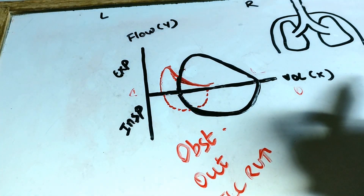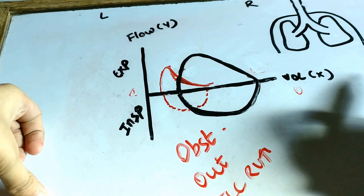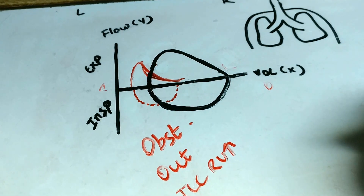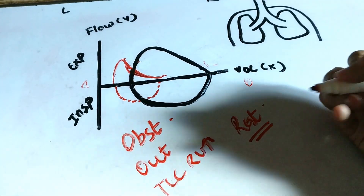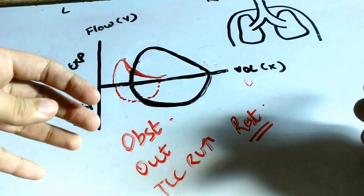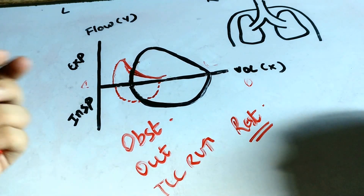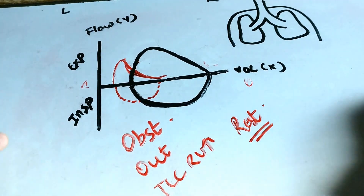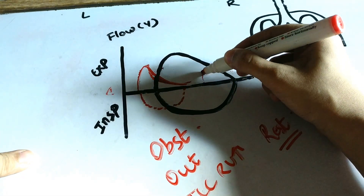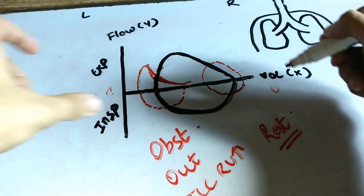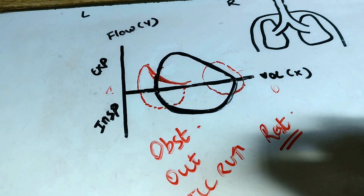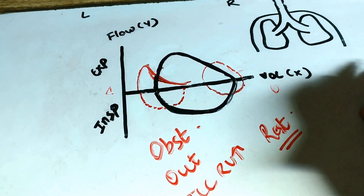Examples of obstructive lung diseases include asthma, COPD, emphysema, and chronic bronchitis. In restrictive lung diseases, there is a problem with air getting inside the lungs. There is a restriction to airflow, so the total lung capacity and residual volume decrease and the loop shifts towards the right. It looks like a smaller version of the normal flow volume loop — no scooped out expiratory limb or anything special.